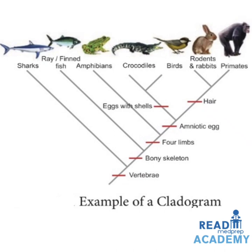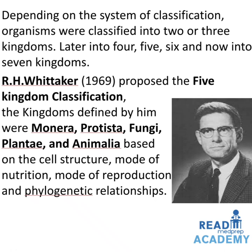Depending on the system of classification, organisms were classified into two or three kingdoms, later into four, five, six, and now even seven kingdoms. R. H. Whittaker (1969) proposed the five kingdom classification. The kingdoms defined by him were Monera, Protista, Fungi, Plantae, and Animalia, based on cell structure, mode of nutrition, mode of reproduction, and phylogenetic relationship. They are classified as prokaryotic organisms (Monera), eukaryotic unicellular organisms (Protista), multicellular phototrophic organisms with cell walls (Plantae), heterotrophic organisms with cell walls (Fungi), and multicellular organisms without cell walls (Animalia).